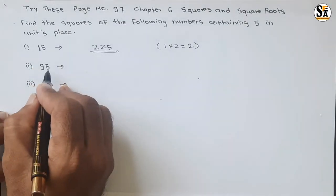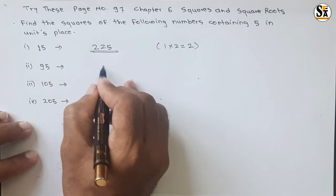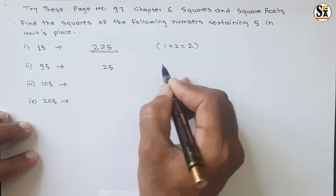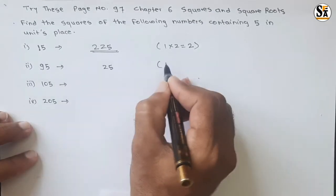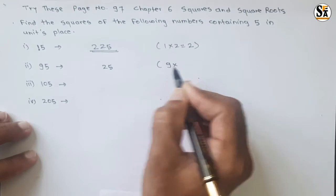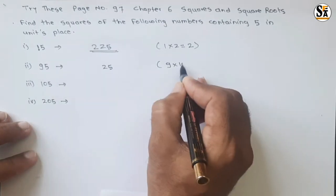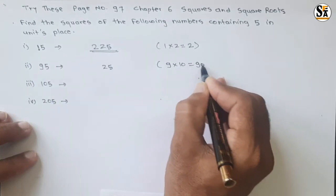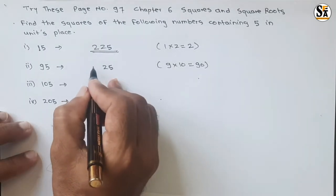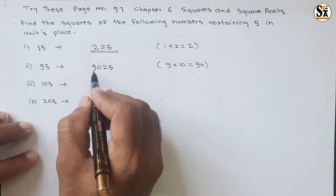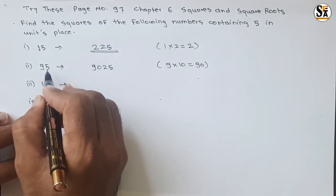Similarly for 95, write 25 here, and the remaining number 9 is multiplied with the next number which is 10. The multiplication is 90, so put 90 here. We will get 9025 as the square of this number.